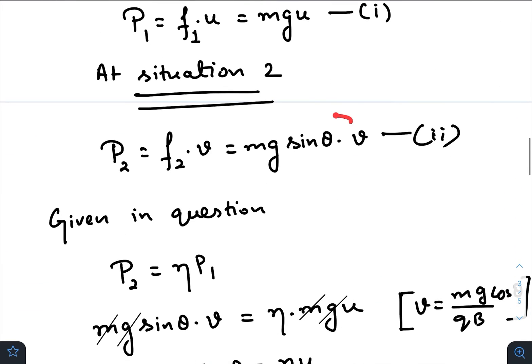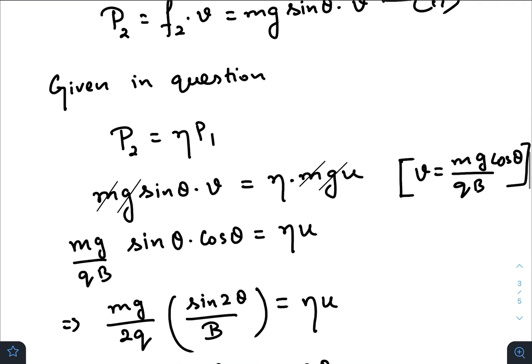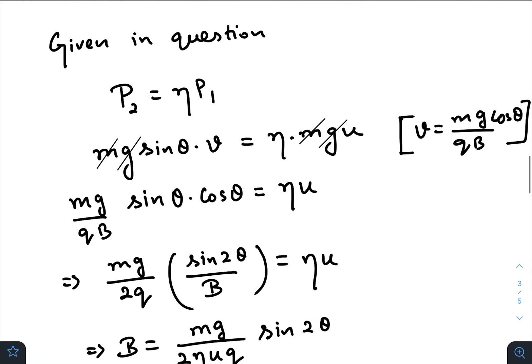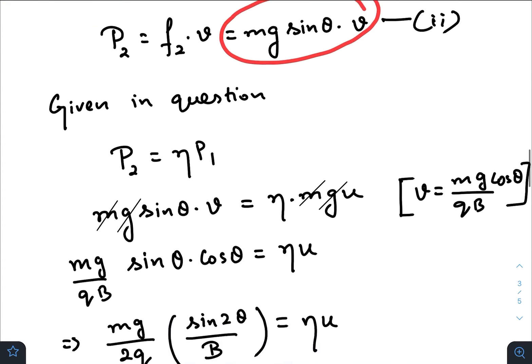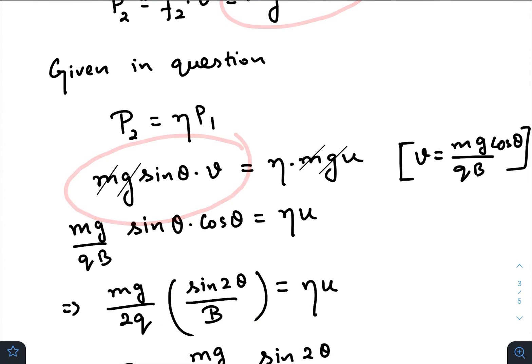So mg sin theta times v. Now in the question they have already told that P2 is equal to eta times the initial power dissipation. So P2 is mg sin theta v and eta times P1 was this one.